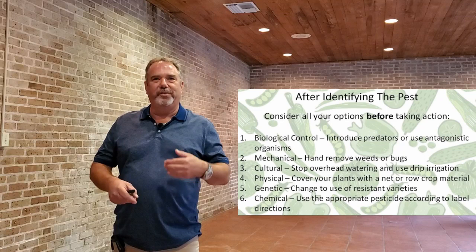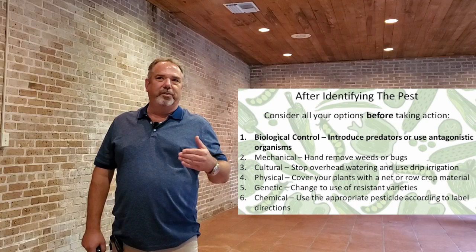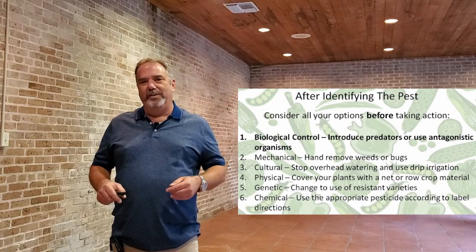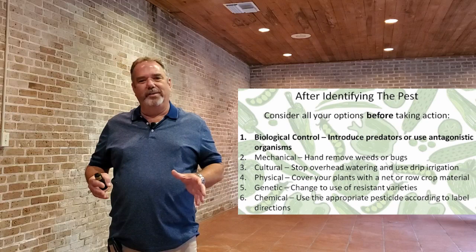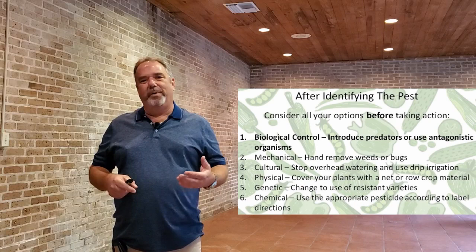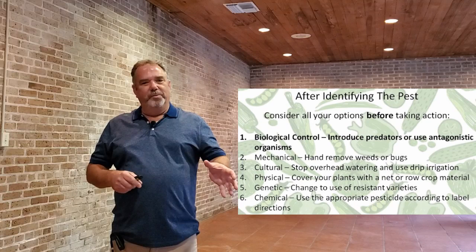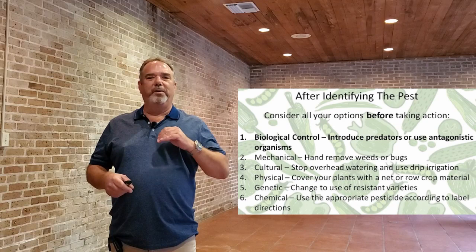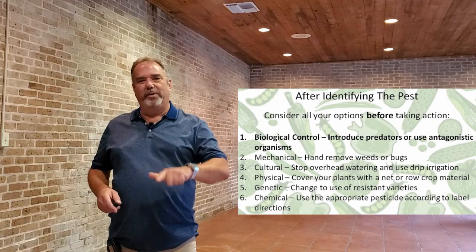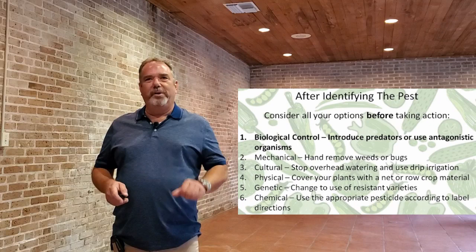After identifying the pest you can consider all your options before taking action — pesticide use is usually the very last thing suggested, with two or three chapters on cultural practices and other controls first. One of the first things you can do is biological control: introducing predators or using antagonistic organisms. You don't always have to introduce these insects or predators — sometimes it's just a matter of providing the right environment. These could be birds, predatory insects, or lizards — all helping keep the pest population down.